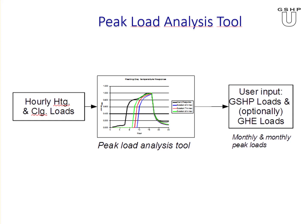Before getting to GLHE Pro itself, there's a pre-processing tool called the Peak Load Analysis Tool. In version 5 it's simply an Excel spreadsheet running some VBA code. It takes the hourly heating and cooling loads you get from a tool like EnergyPlus or eQUEST — typically the loads on the ground source heat pump — and helps you determine the peak load each month, its duration, as explained in the following slides.